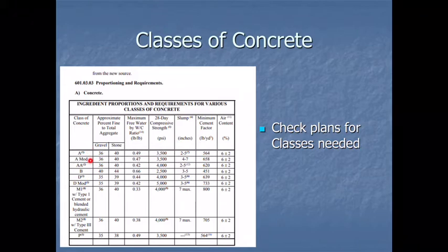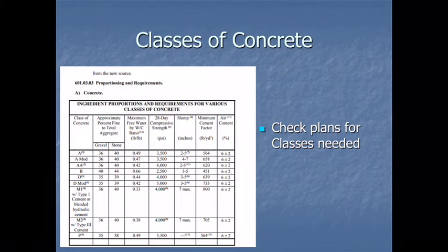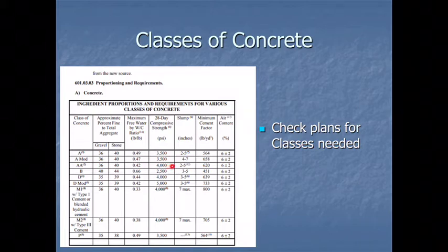Class A mod is a mix designed to be placed under water and is used in drilled shafts. Double A mix is used in the superstructure — bridge decks, bridge railing, some diaphragms. Anything considered superstructure will be Double A concrete, which has a 4000 psi strength, a 2 to 12 inch slump, and carries note 12.